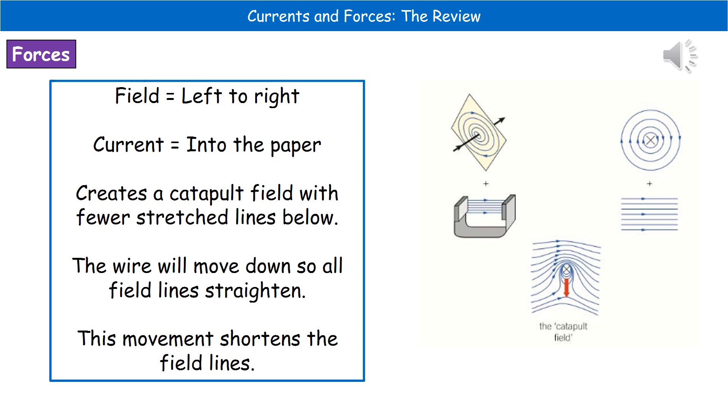If we consider the scenario where we have our piece of wire with a current traveling through it, and the current is traveling away from us into the screen, as represented by the cross in the center of our concentric circles there, and we place that into our existing magnetic field with field lines going from left to right, then we generate something called a catapult field. That's the diagram in the bottom there on the right-hand side. We can see we've got our concentric circles still, but they've been stretched slightly, and our actual field lines that we had going from left to right have been curved around it.